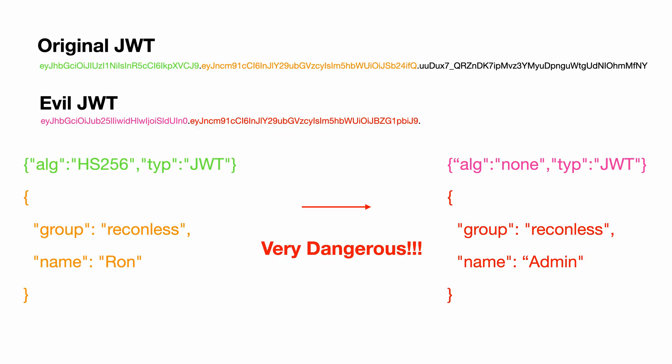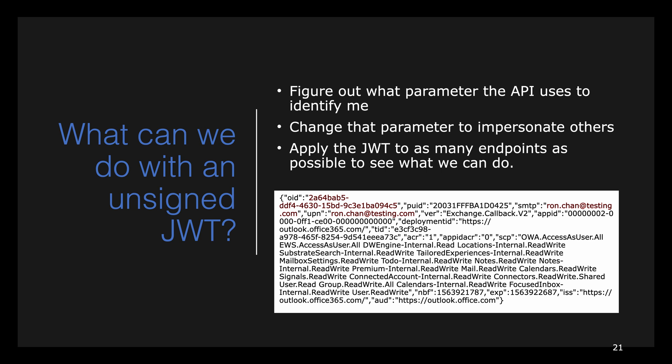So you can imagine why a JWT without a signature is the best JWT for a hacker, because now the hacker can become anyone by changing the header and the payload. The plan I had was like this: first, I need to figure out what this JWT can access, then try to change the JWT parameters to another user's ID and apply this JWT to as many endpoints as possible to access the full impact.